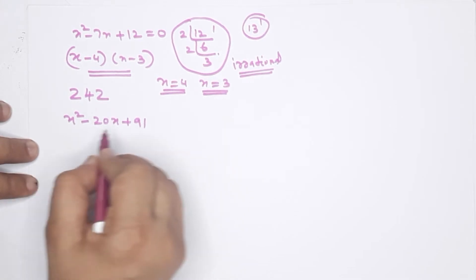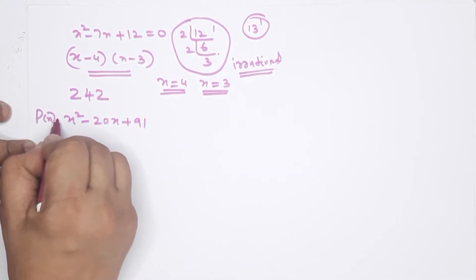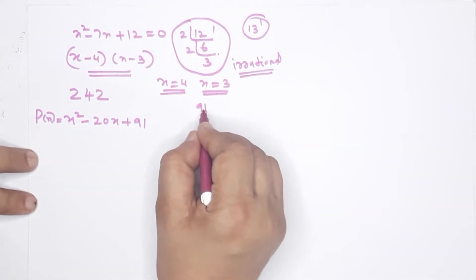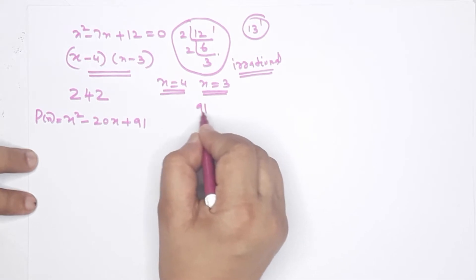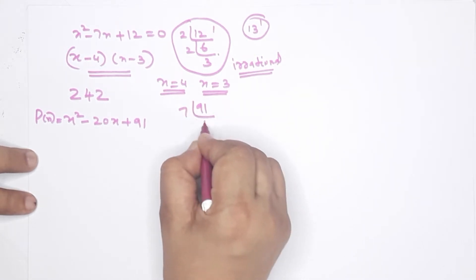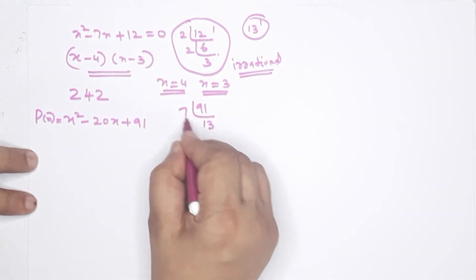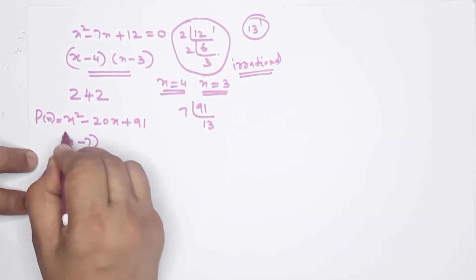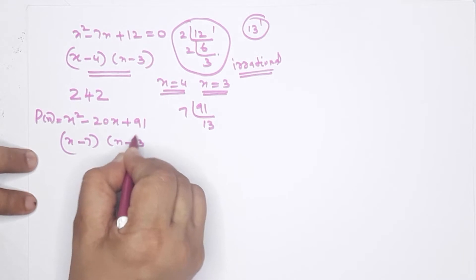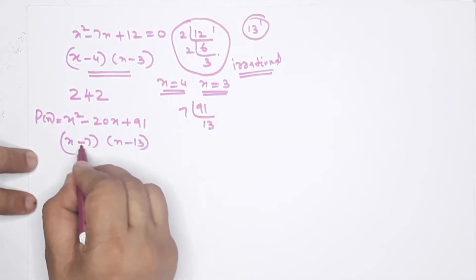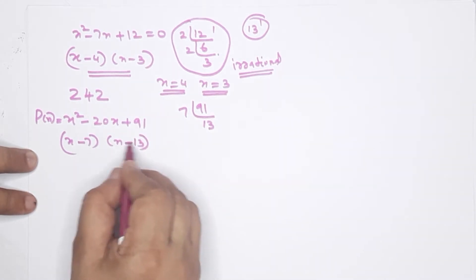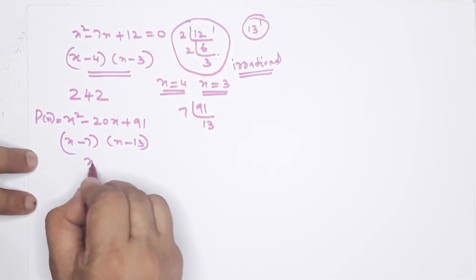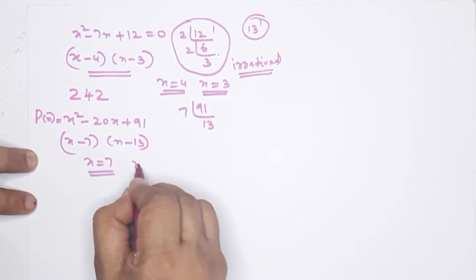We take x²-20x+91 as a second-degree polynomial and need first-degree polynomial factors. We do prime factorization of 91, getting 7 and 13. So x-7 and x-13 are the factors. We verify: 7 × 13 = 91 and 7 + 13 = 20, giving x=7 and x=13.